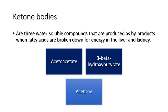Ketone bodies are water-soluble compounds produced when fatty acids are broken down for energy in the liver and kidneys. We have three types: acetoacetate, beta-hydroxybutyrate, and acetone. They serve as a fuel of energy for the liver, kidneys, and brain. Acetoacetate and acetone can be detected in urine, while beta-hydroxybutyrate cannot be detected by urine dipstick — it is detected in the blood and is an important fuel during starvation, especially during pregnancy and the neonatal period.